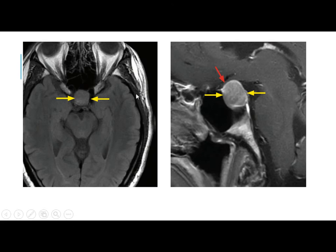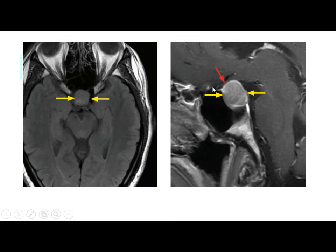On axial FLAIR, there is a well-defined homogeneous iso-intense mass to gray matter causing complete replacement of the pituitary gland. On sagittal T1 with contrast, there is an enhancing mass causing superior displacement of the optic chiasm.